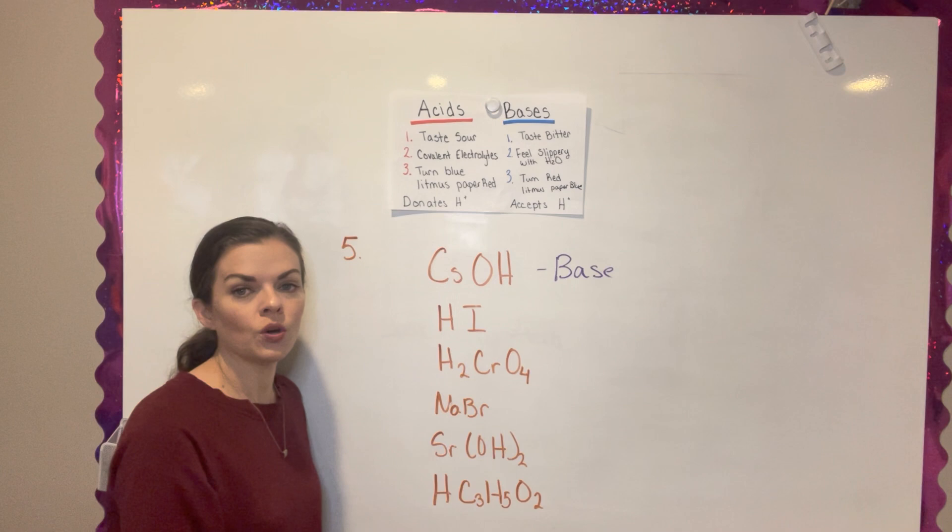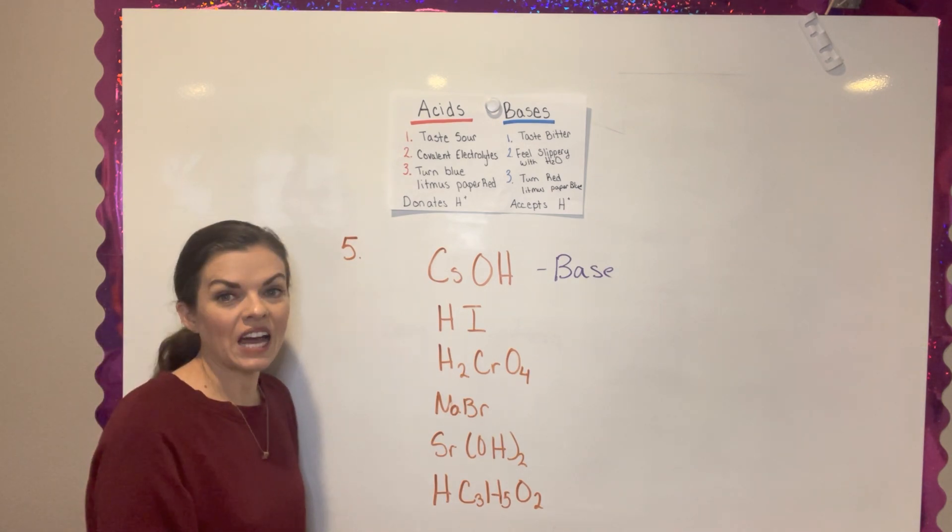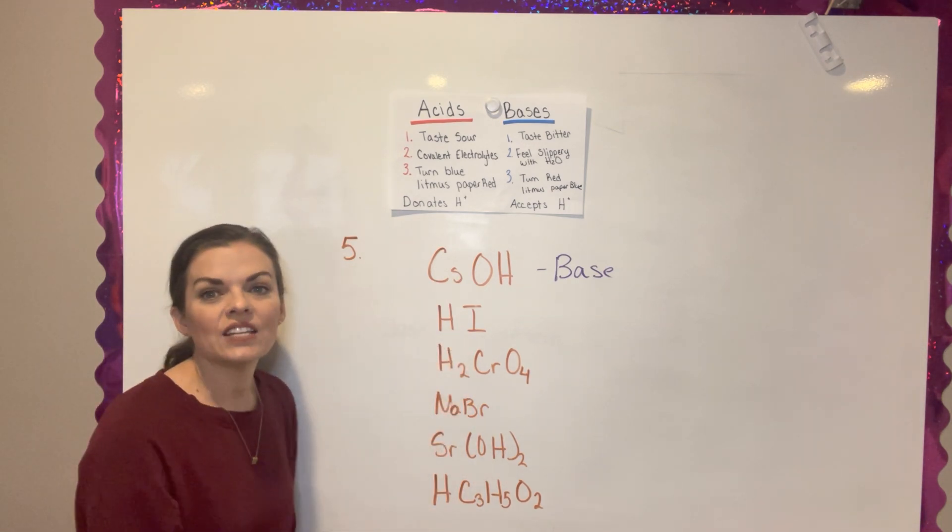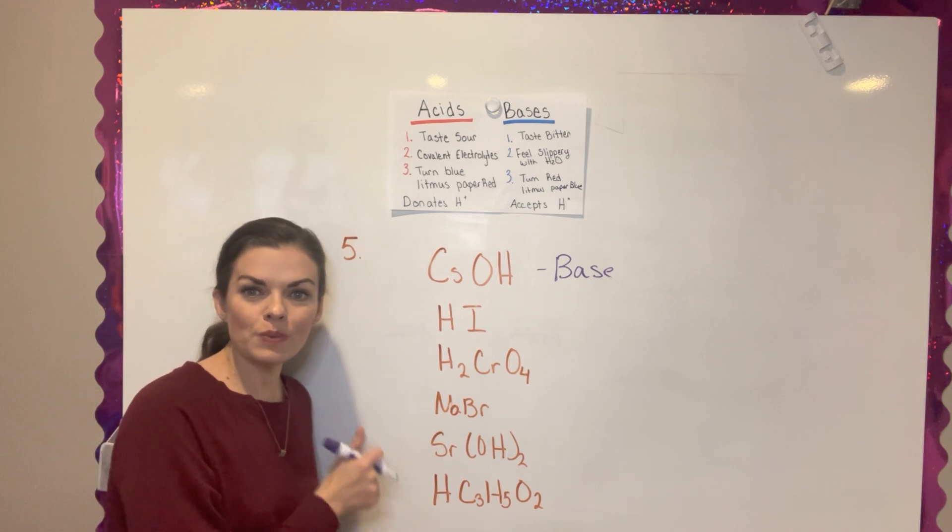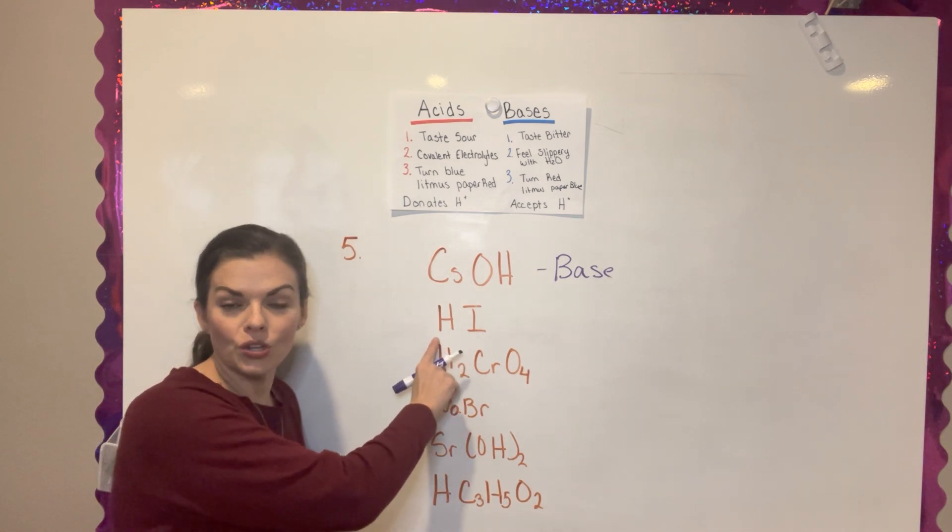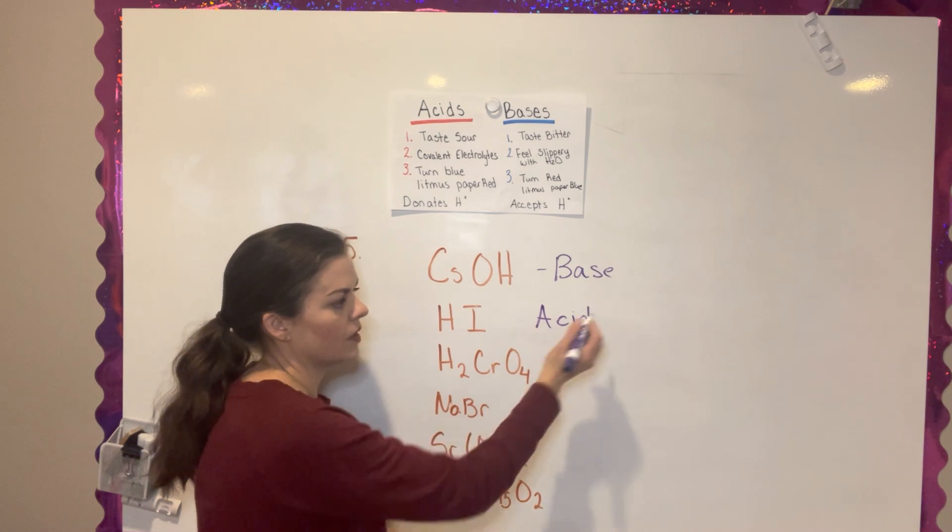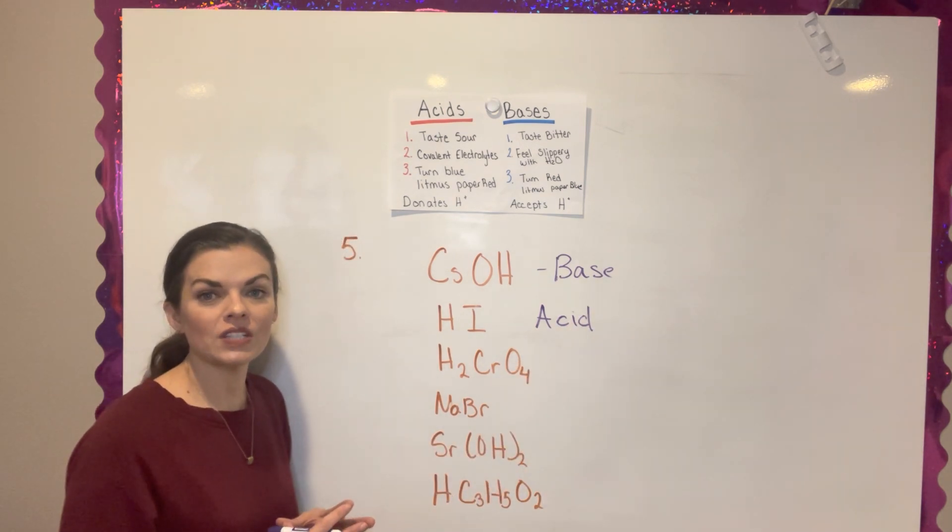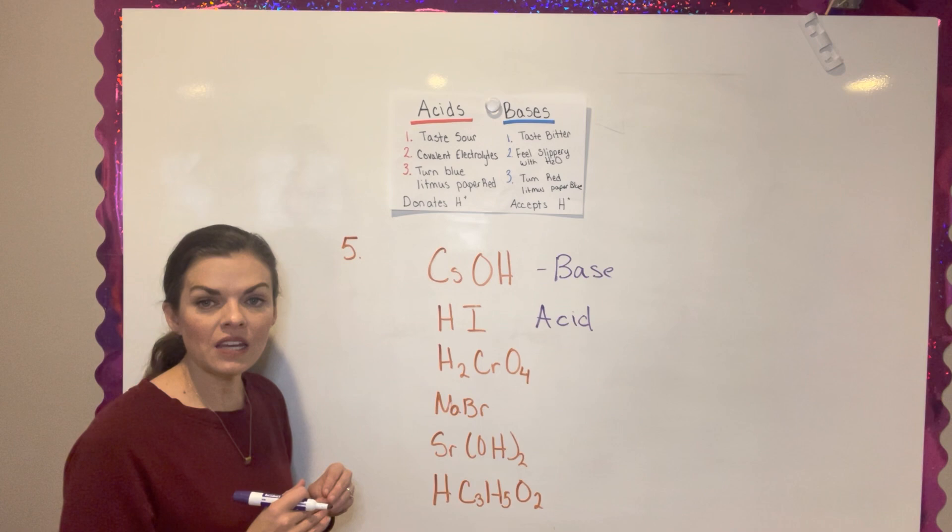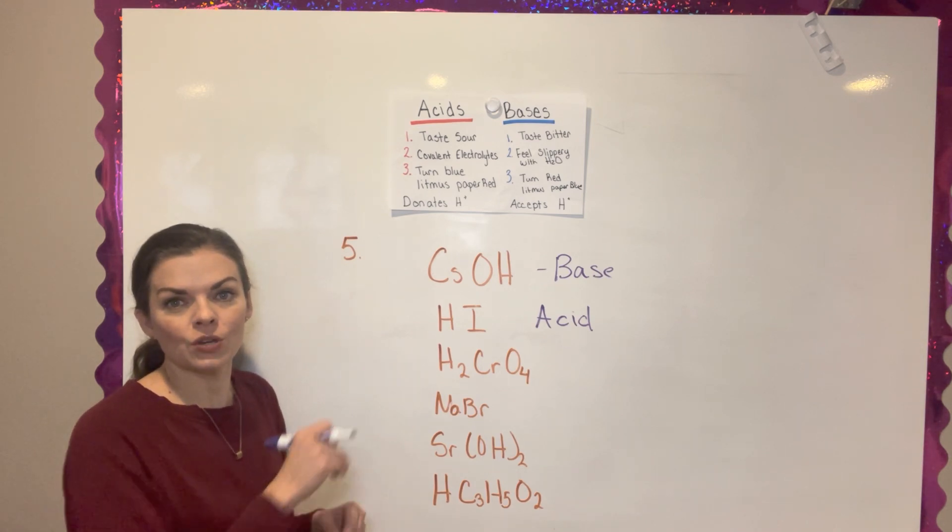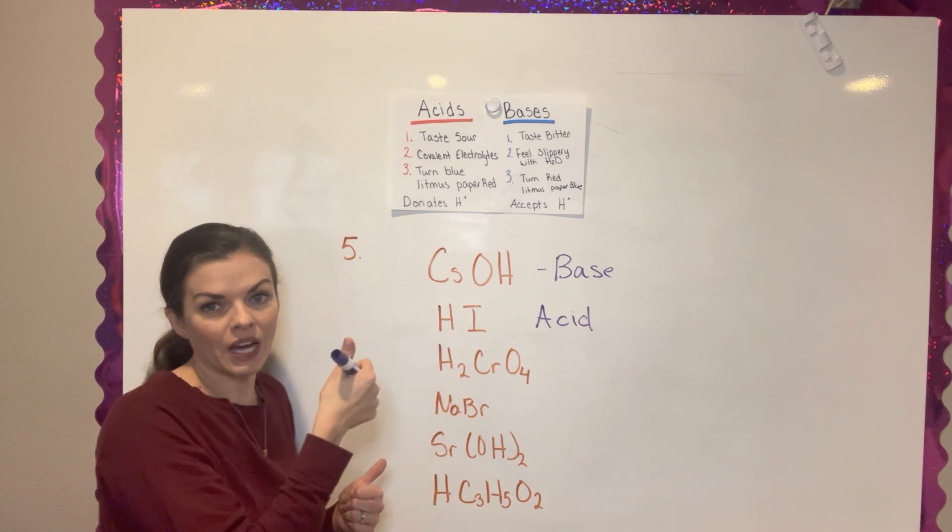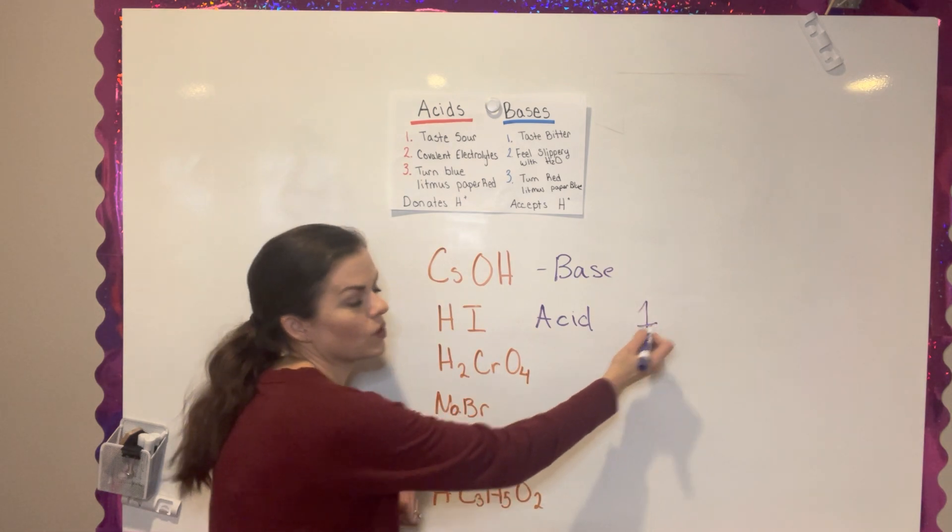For the second one, we have hydrogen and iodine. Since we have that hydrogen in the very beginning, that is a good clue that we're dealing with an acid. The question also wants you to tell us how many hydrogens the compound can donate. Well, this compound only has one hydrogen, so it can only donate one.